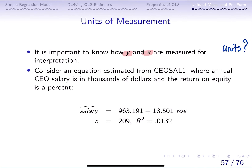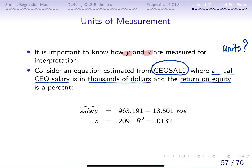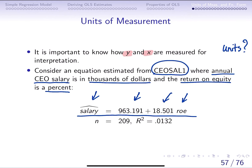Let's start with an example. In R, you can take a look at the CEO salary data, where annual CEO salaries are measured in thousands of dollars and the return on equity is measured as a percentage. We're basically saying that CEO salary depends on return on equity. We predicted this sample regression line: the intercept is 963 and the slope is 18.5. This is a really bad fit — the R-squared is about 1% — and this is on 209 CEOs.